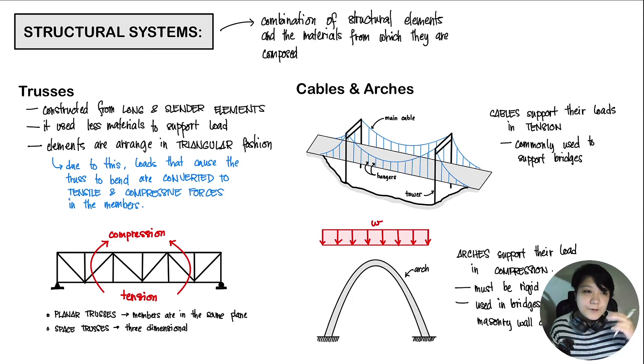We have two types of trusses. The first one is your planar truss. Your planar trusses are where members are in the same plane. And then we have your space trusses. This one is a three-dimensional structure.